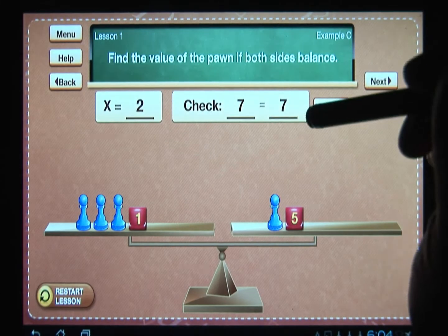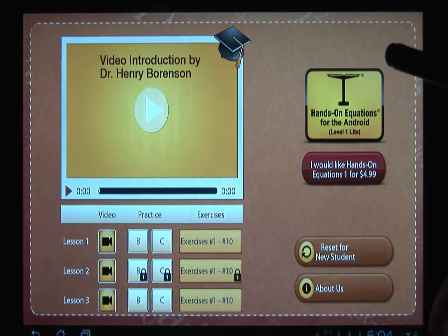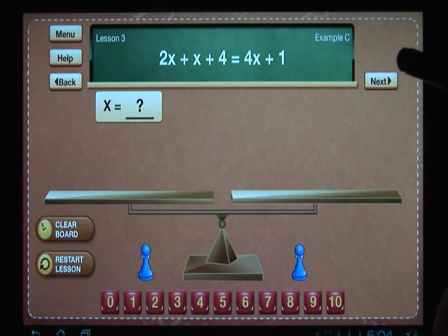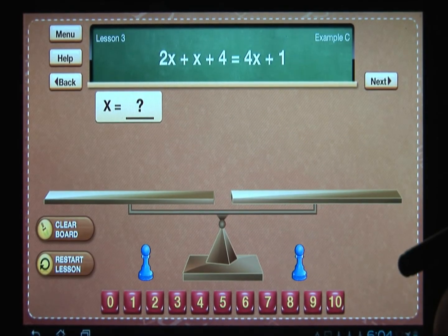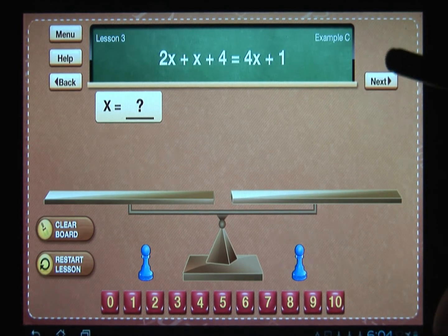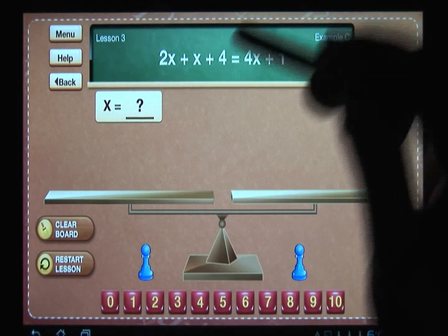Let me now go on and give you an example from lesson number three. Remember this example can be done by students as early as the third grade using hands-on equations. So let's see how we do this. In the third lesson, the x's are the blue pawns.